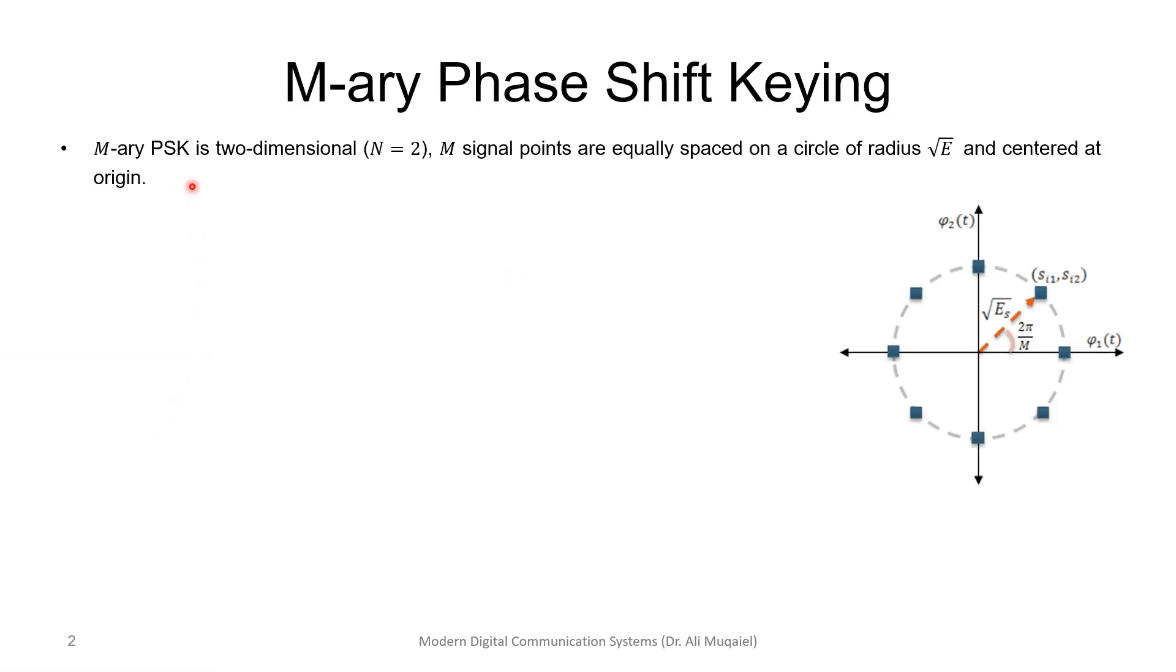The M-ary Phase Shift Keying is two-dimensional, which means n equals 2. We have two bases. M represents the number of signal points, and those signal points are equally spaced on a circle. The circle has a radius of square root of E, and the energy would be E, so the circle is centered at the origin. We can look at the angle between different symbols.